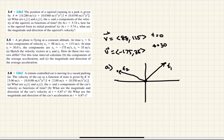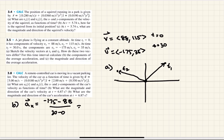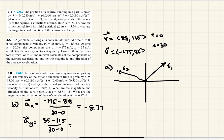For part b, calculate the components of average acceleration. Average acceleration equals change in velocity over change in time. For the x component: (−175 − 88)/(30 − 0) = −8.77. For the y component: (35 − 115)/(30 − 0) = −2.67. So the acceleration vector components are (−8.77, −2.67).